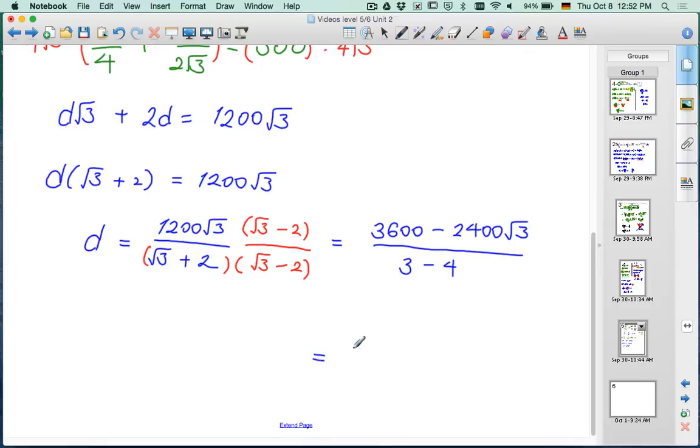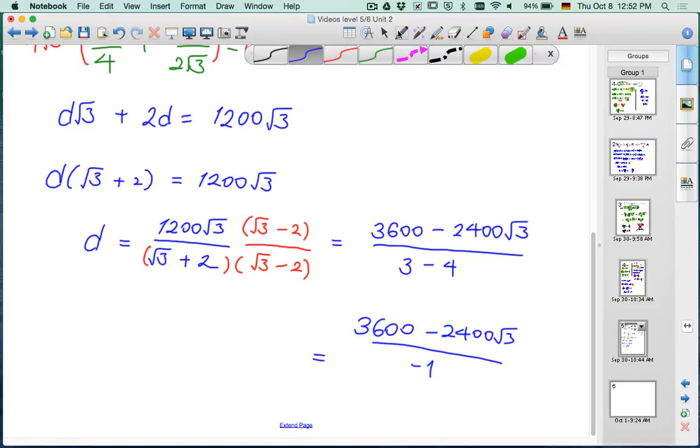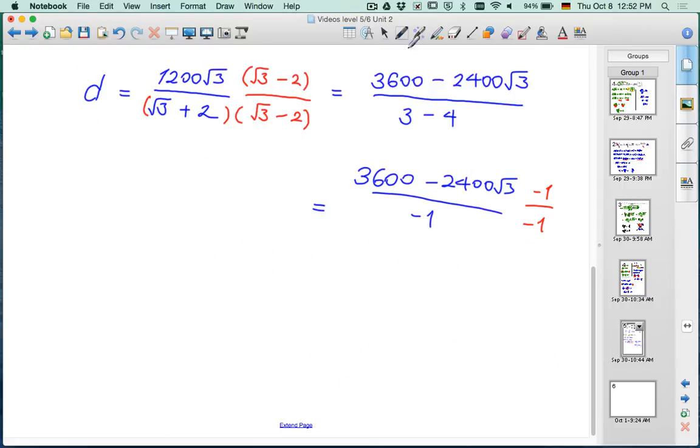So the answer is, well, let's write it this way. 3,600 minus 2,400 root 3 over negative 1. So I'm going to multiply this by negative 1 over negative 1. Is that okay? That's perfect because then you can see that we won't even have a denominator in our final answer once we rationalize. So it'll be 2,400 root 3 minus 3,600 meters.